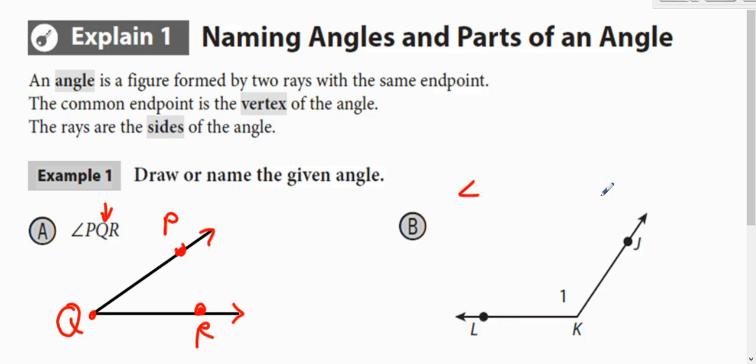So this angle over here is already drawn out for us. So let's just name it. The only thing that matters is that K goes in the middle. So you can name it angle LKJ, or you can switch those letters around and start with J first as long as K goes in the middle.